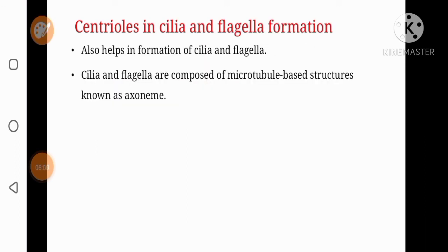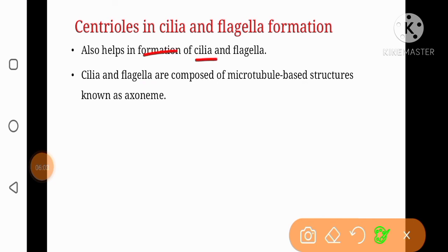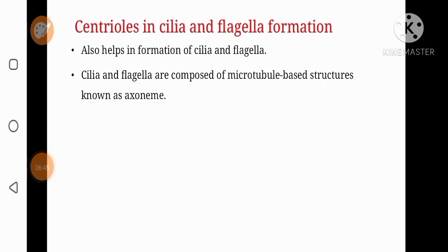Apart from their role in cell division, centrioles also help in the formation of cilia and flagella. Cilia and flagella are thread-like structures found in some unicellular organisms and help in locomotion, like in Paramecium, Euglena, or Chlamydomonas. Cilia and flagella are composed of microtubule-based structures known as axoneme, and these structures will be discussed in detail in upcoming videos.